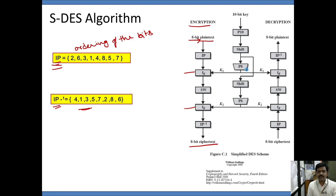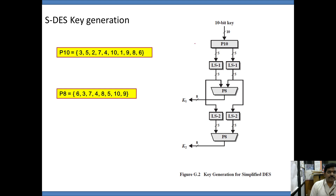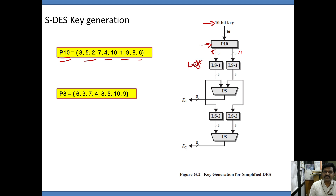On the key side, we see how the key gets produced for each round. The given key is a 10-bit key and it gets permuted with the help of the P10 table, which indicates the bit positions that are to be permuted. The permuted 10 bits get divided into two halves of 5 bits each. Each 5-bit half undergoes a left circular shift by 1 bit for the first round.